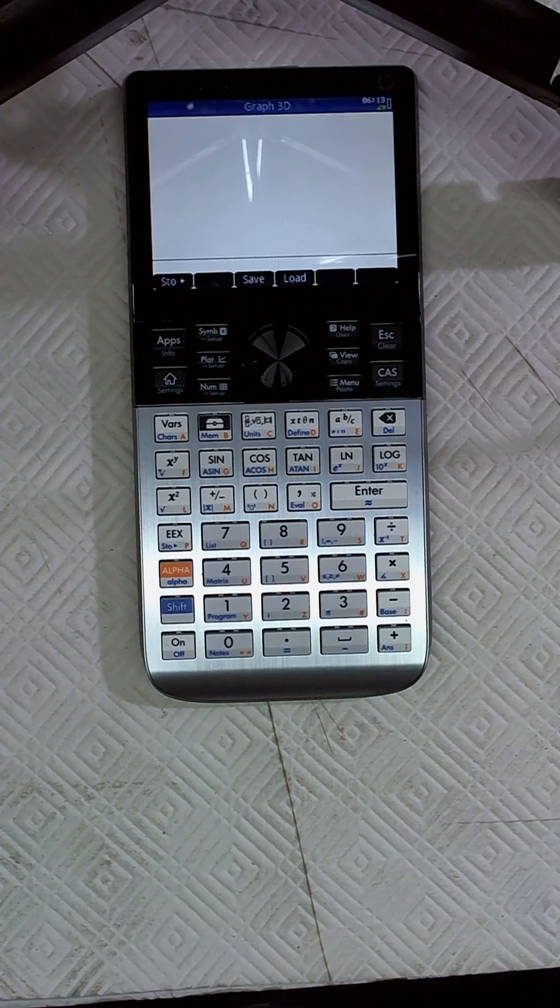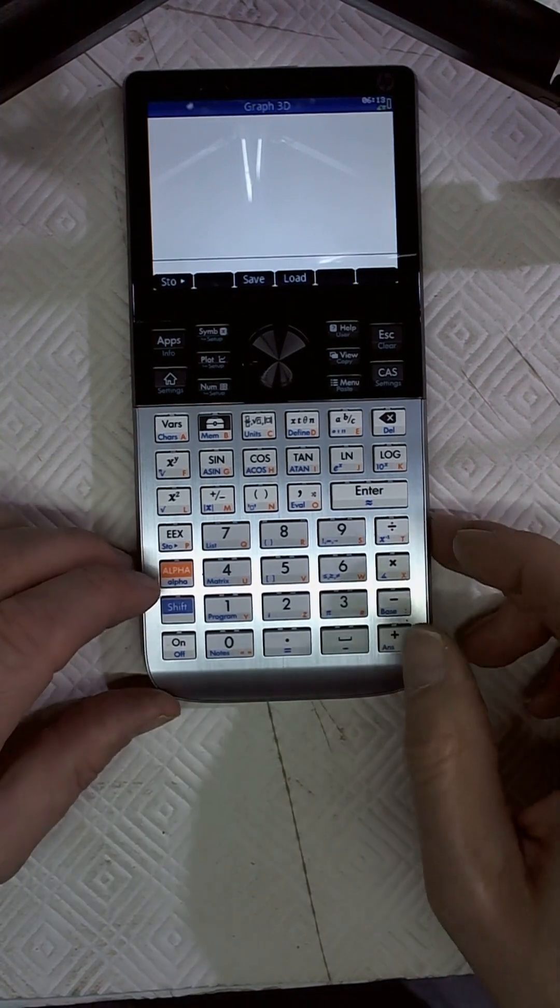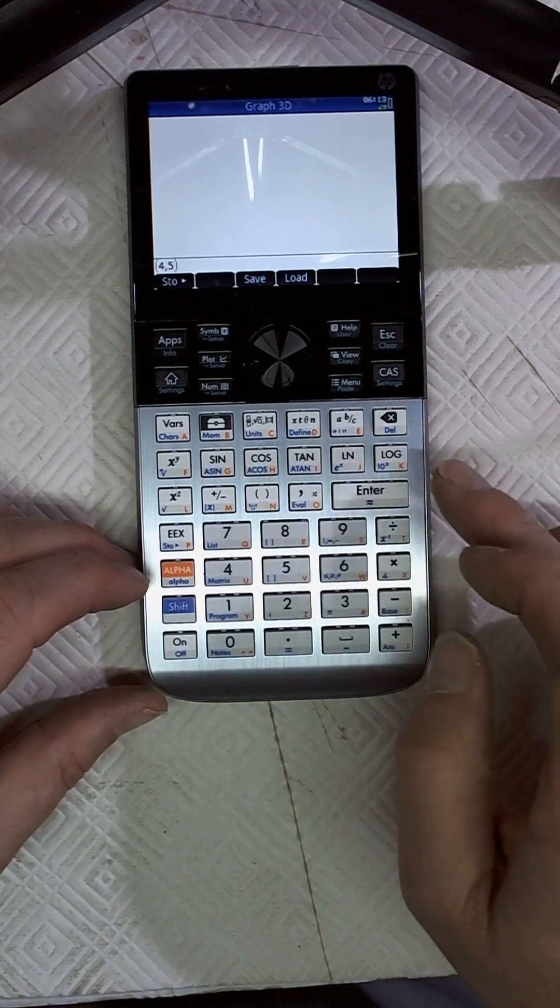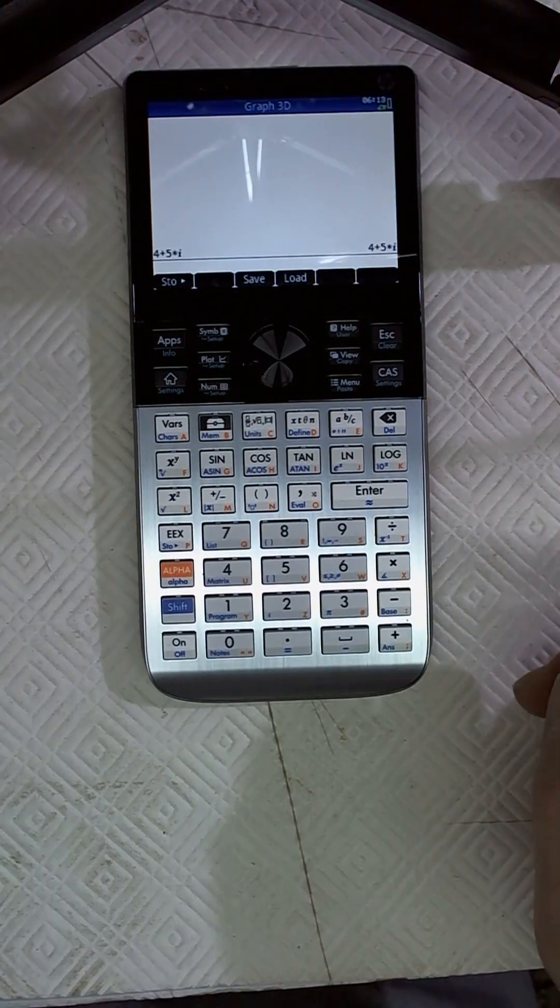G'day Jason. Just showing you the rectangular and polar coordinates function here on the HP Prime. So basically I'm just going to type in, open the brackets there, 4,5 and press enter. So that's your rectangular version.